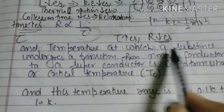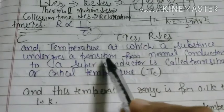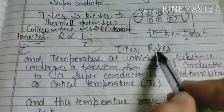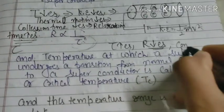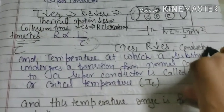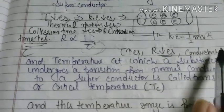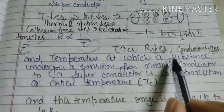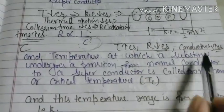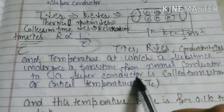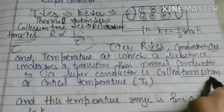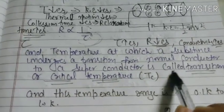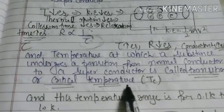The temperature at which a substance undergoes a transition from a normal conductor to a superconductor is called the transition temperature or critical temperature.